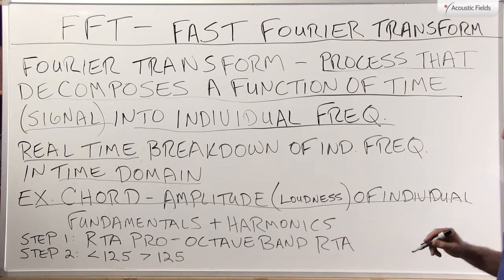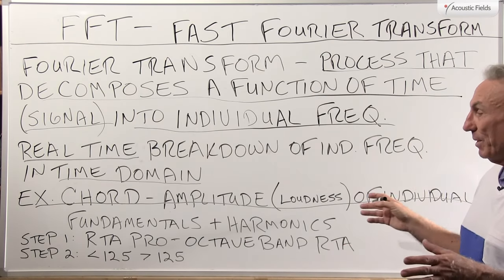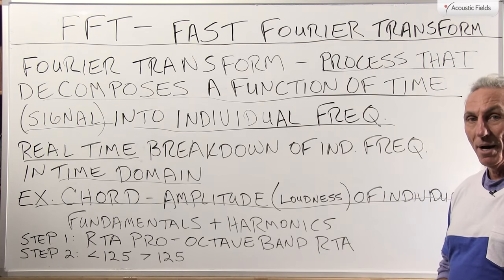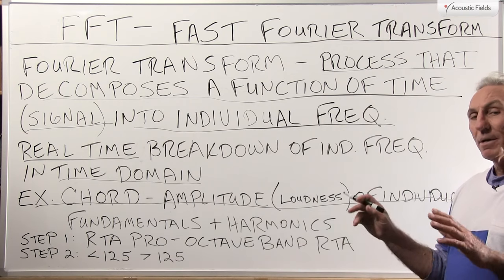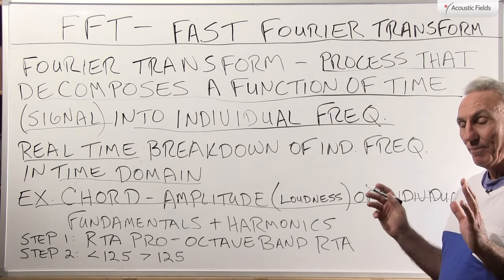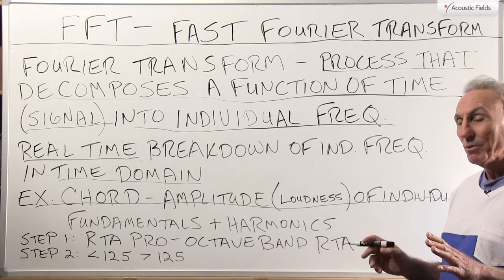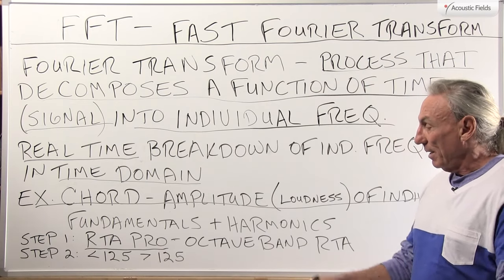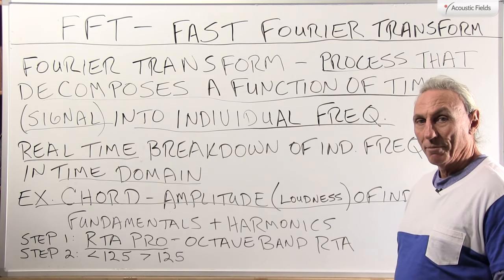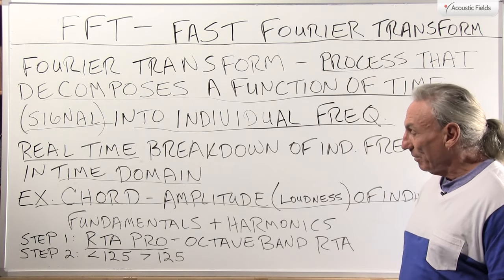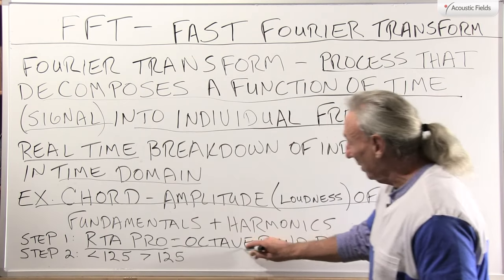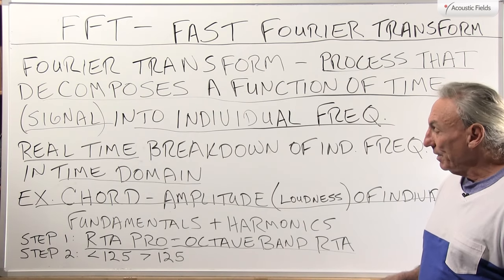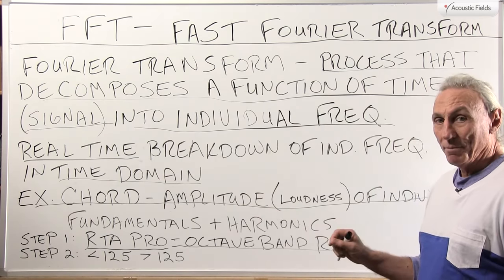So the chord's going to have a certain amplitude or loudness, and we're going to break that chord down into its individual fundamentals and harmonics. I could go into a long lengthy explanation here, but I'm going to give you an app — an iPhone app called RTA Pro. Brian can put a picture of the symbol up for you in this video. It's called RTA Pro, and I think it's like $2 or $3 — not very expensive, so buy it and download it into your phone.